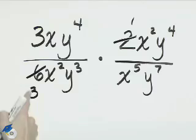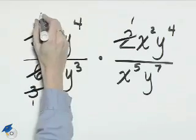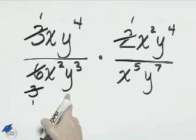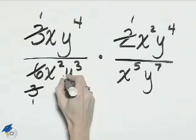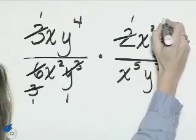And here we can divide again the 3 in the denominator with this 3 in the numerator. We can cross-divide y to the 3rd power and y to the 4th power. y to the 3rd will become 1, y to the 4th will become y.